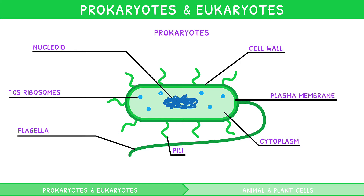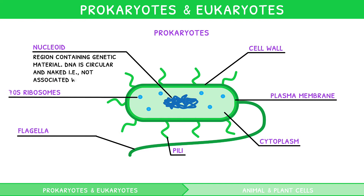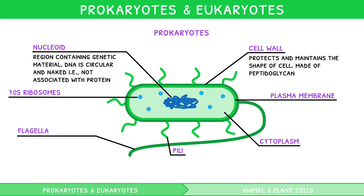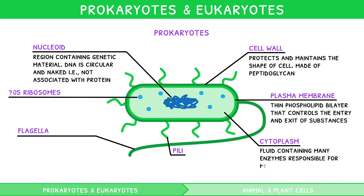The nucleoid is the region containing genetic material. The DNA here is circular and naked, i.e. not associated with protein. The cell wall protects and maintains the shape of the cell. It is made of peptidoglycan in a prokaryote. The plasma membrane is a thin phospholipid bilayer that controls the entry and exit of substances. We will explore this in depth in our next IB Biology Topic 1 video. The cytoplasm is a fluid containing many enzymes responsible for metabolism.